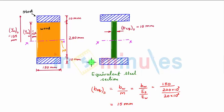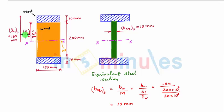The dimensions of the remaining actual steel part remain the same — that is, 150 mm width and 10 mm thickness. The equivalent steel section is also a symmetrical section where the central axis passes through the center. Therefore, Ymax of steel and Ymax of wood, which is the Ymax of the equivalent steel part, will remain the same.